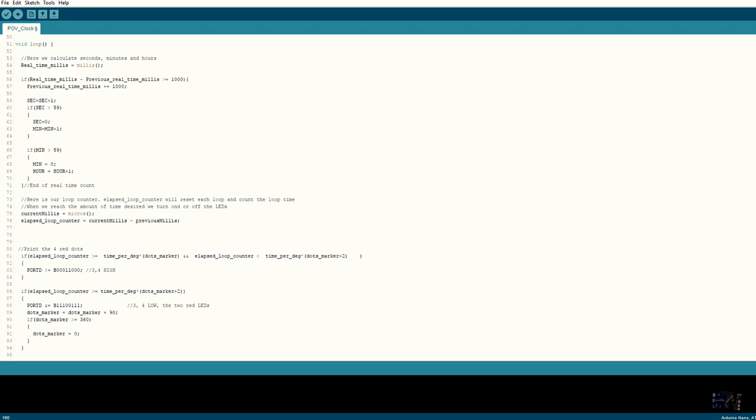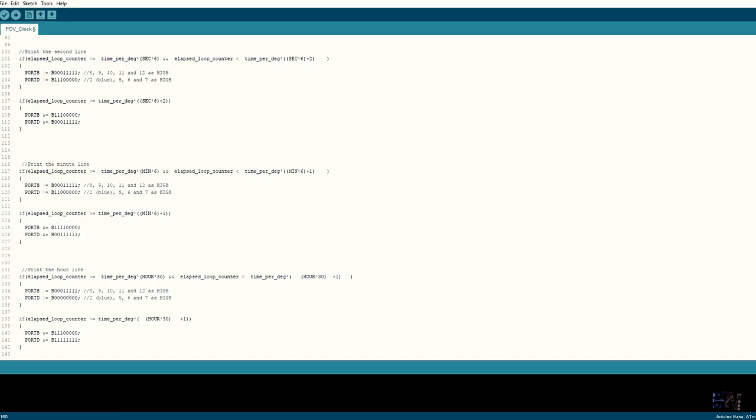Using another timer, we count seconds, minutes and hours. So for example, if it's 3 o'clock, we should have an hour indicator at 90 degrees. So using an if statement, when the elapsed loop counter is higher than 90 degrees, I turn on the green LEDs, and after just 1 degree, I turn them off. That should give me the line at 3 o'clock.